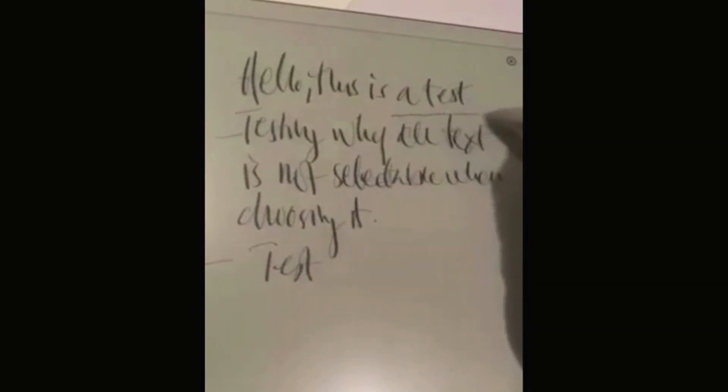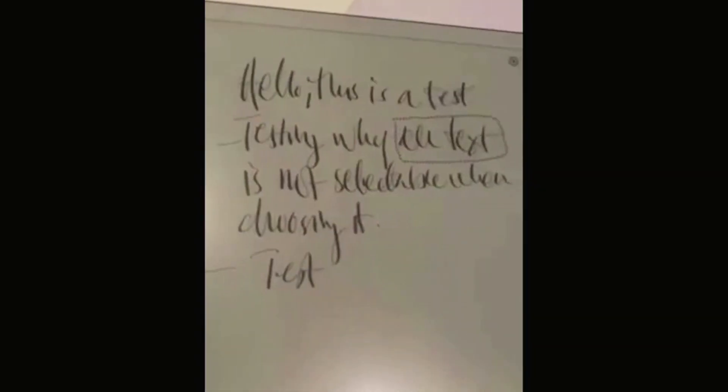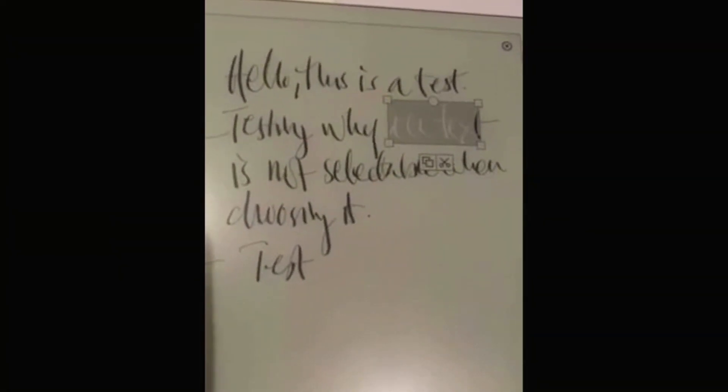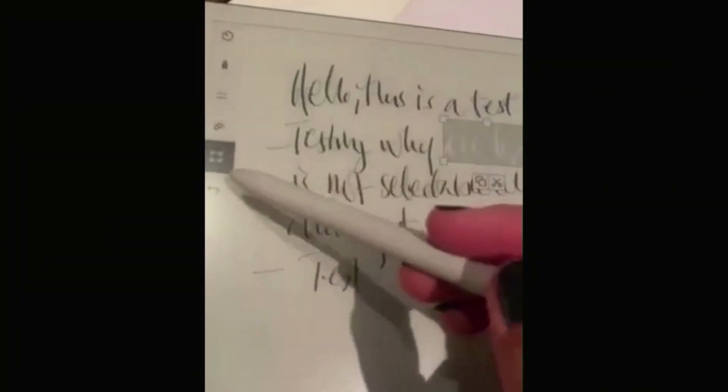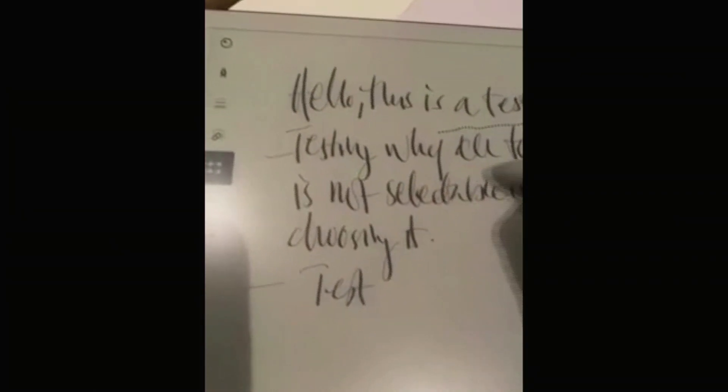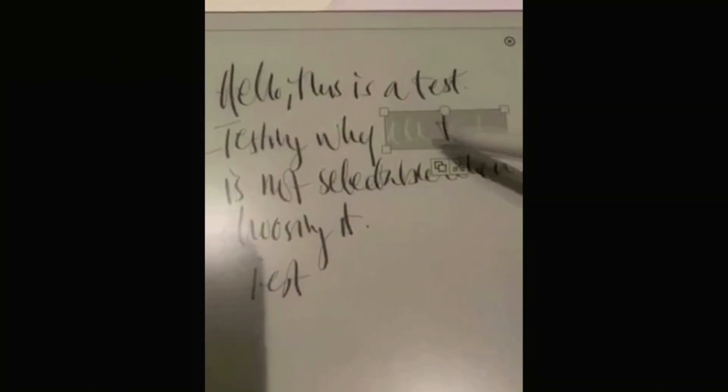There's another issue where she found out that the selection tool did some strange things. She tried so hard to go around the text and select it — you can see it here. Notice how the end 't' got missed. It does it again, and this time the middle 't' didn't get selected either.